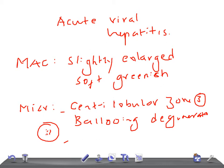Some areas can show drop out necrosis, also known as acidophil bodies, identified by a necrotic eosinophilic mass of cytoplasm — they are known as Councilman bodies.